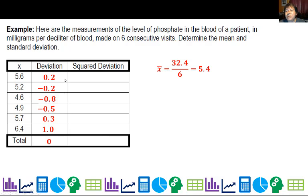So go ahead and square these. So 0.2 squared is going to be 0.04. Negative 0.2 squared is positive 0.04 as well. Then we get 0.64, 0.25, 0.09, and one squared is one adding them up. The sum of the squared deviation is 2.06.